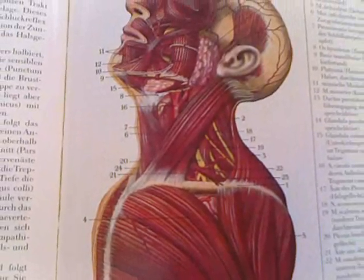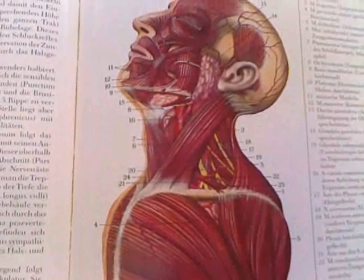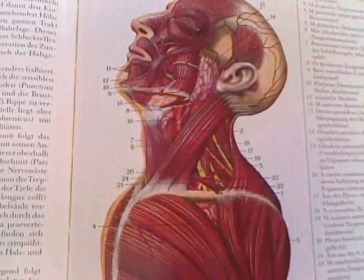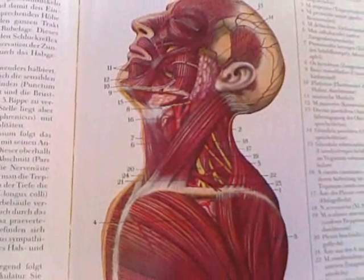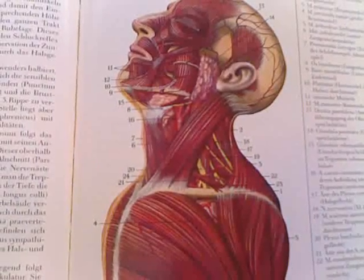Number fourteen is the parotid gland. I'll have to back up just a little bit so you can see the number. Just in front of the ear is the parotid gland. Number fifteen is the submandibular gland.